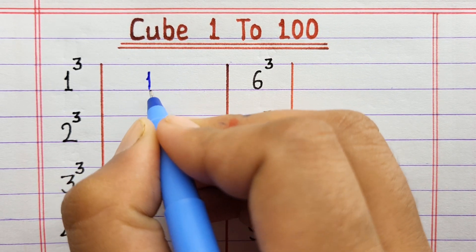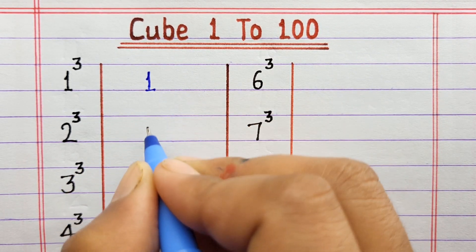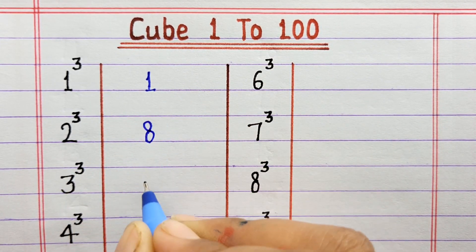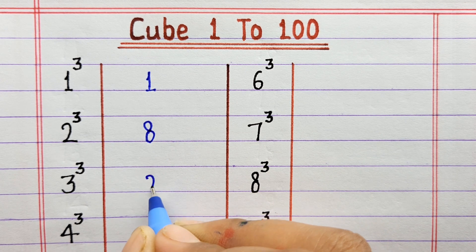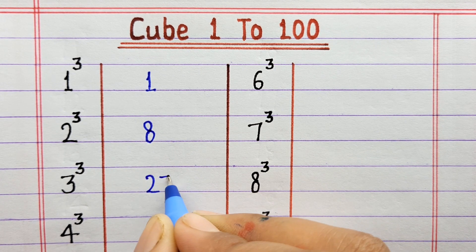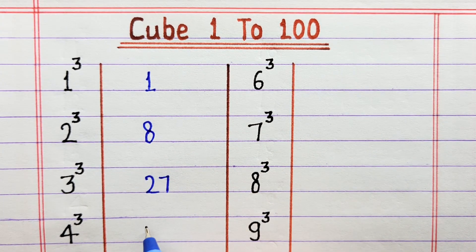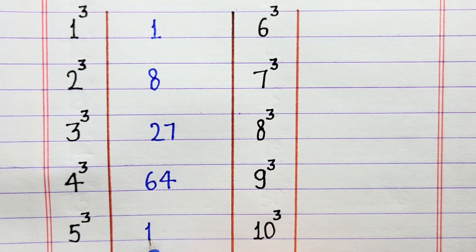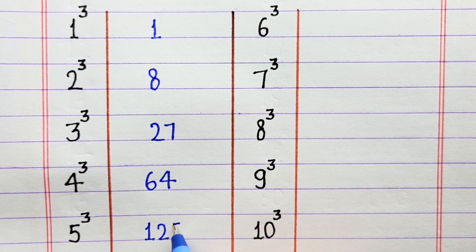1 ka cube 1. 2 ka cube 8. 3 ka cube 27. 4 ka cube 64. 5 ka cube 125.